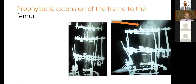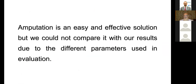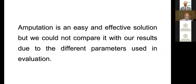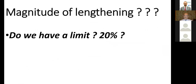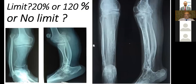Sometimes you put the frame for the femur as a prophylactic treatment. The reconstruction sometimes looks difficult, lengthy, and requires experience. Amputation is an easy and effective solution. We cannot compare our results with amputation because our patients refuse amputation totally. The magnitude of lengthening is not limited to 20%, because the American literature speaks about the 20% rule based on experimental studies using rabbits — but we are not rabbits. This is congenital hypoplasia, another entity, in a patient aged 28 years. After repeated lengthening, there is no limit — this case achieved 120% lengthening.